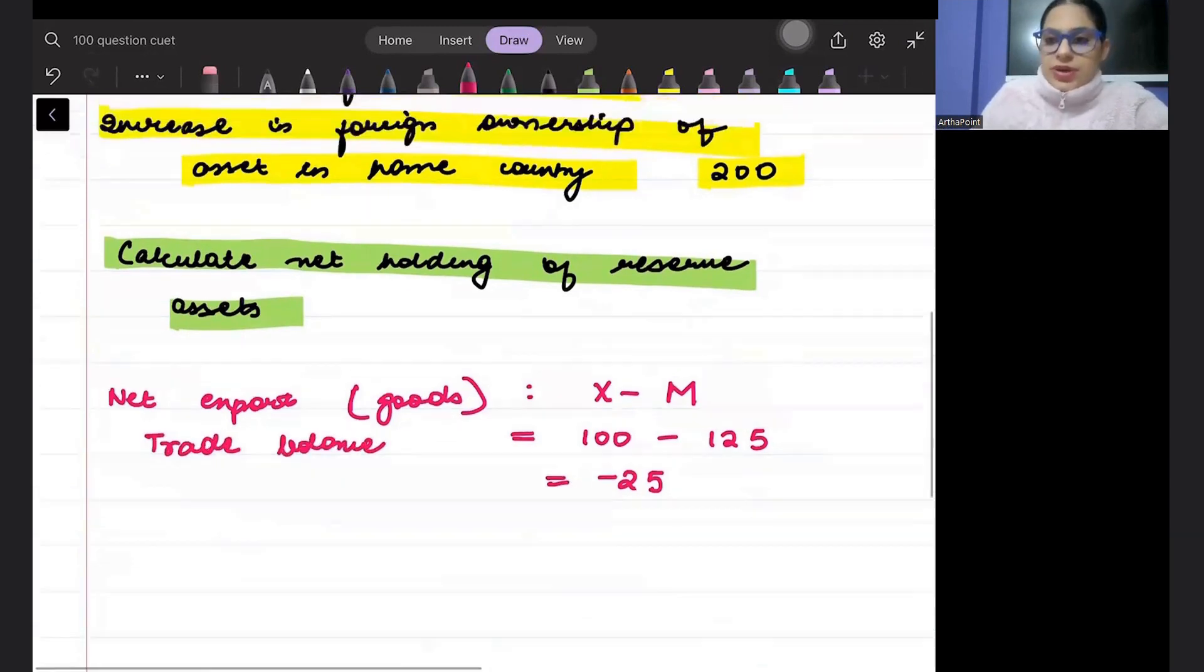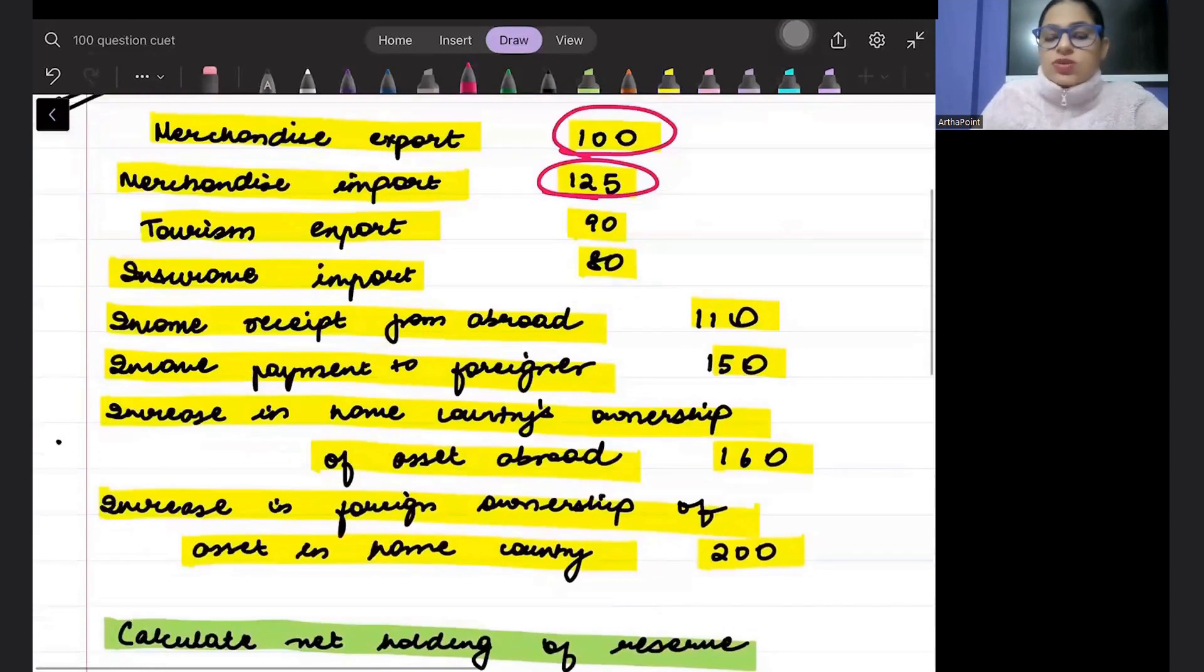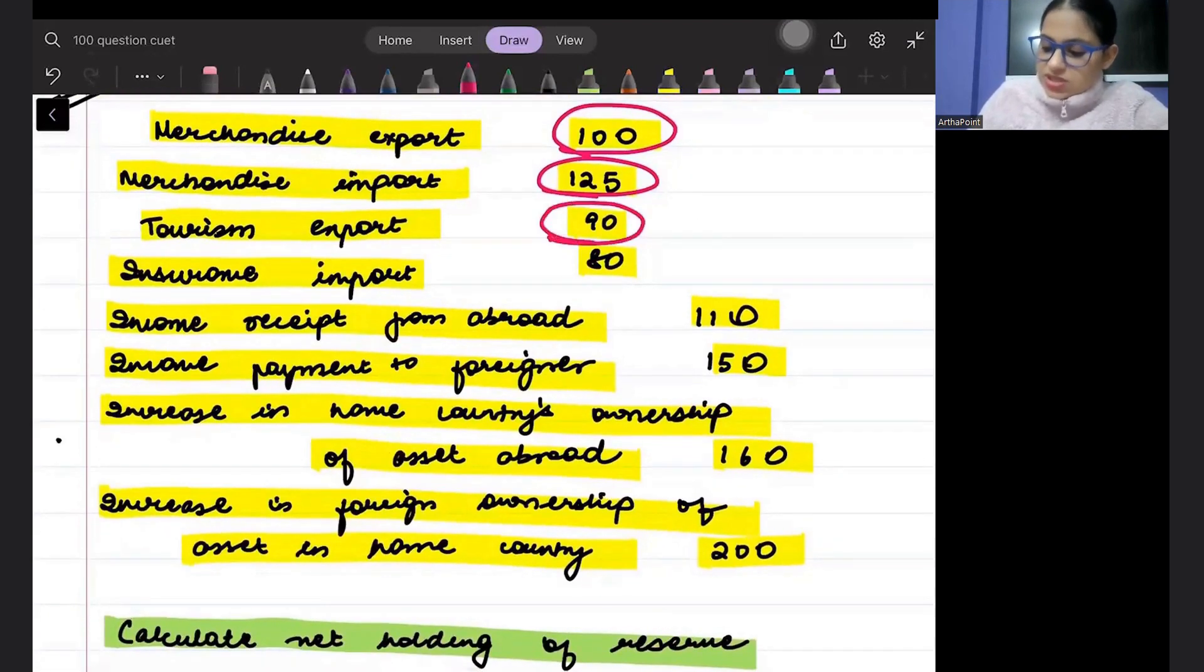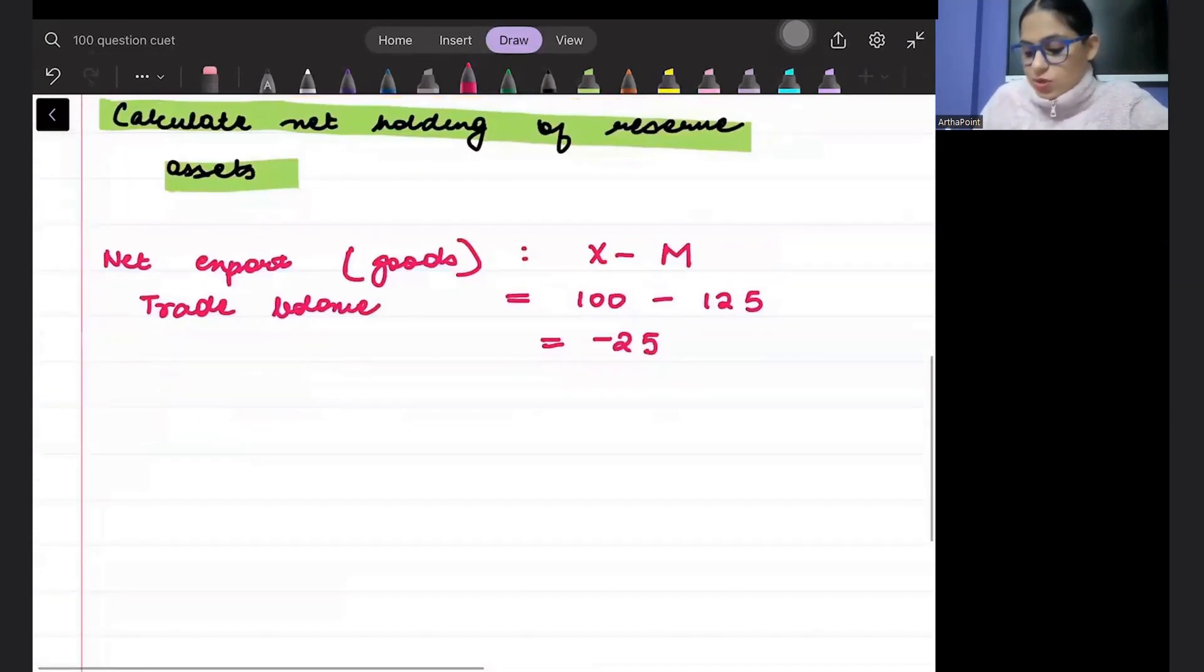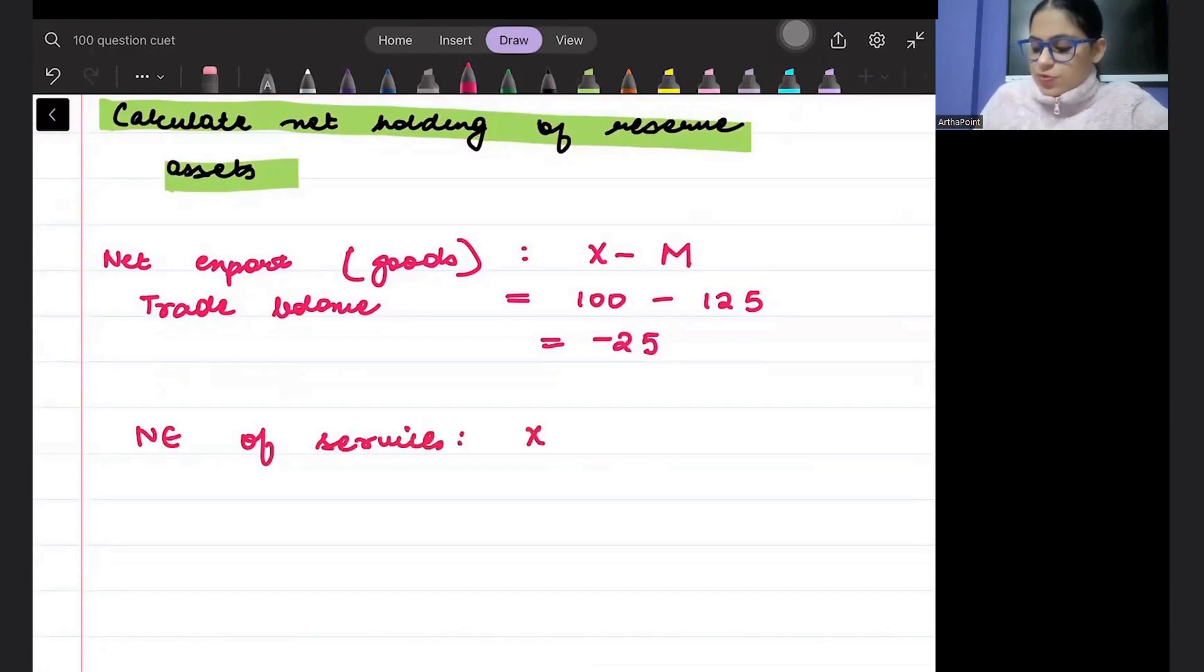Peter, see further. Now, services ka dekhte hai. So service export is 90 and import is 80. So Peter, what is going to happen to net export of services? Export minus import. That means 90 minus 80. That means 10.